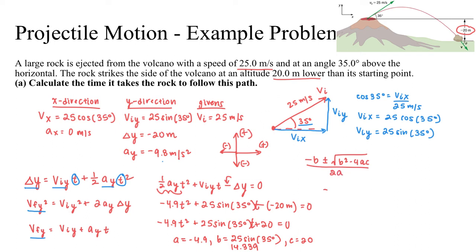And then plugging in values, that would be negative 14.339 plus or minus the square root of negative 14.339 squared minus 4 times negative 4.9 times 20. And just to check, this will be a positive value here. This will also be positive. So my determinant will be positive. And that'll all be over 2 times negative 4.9.